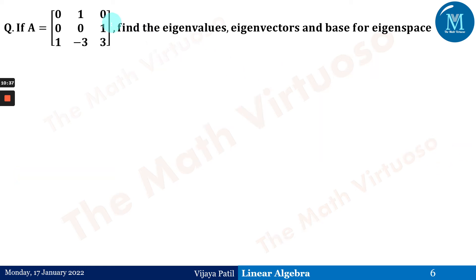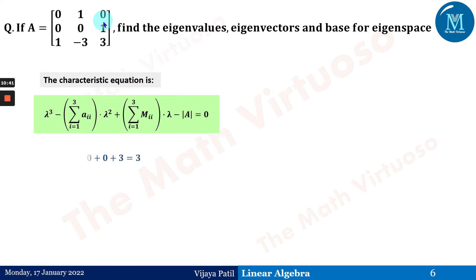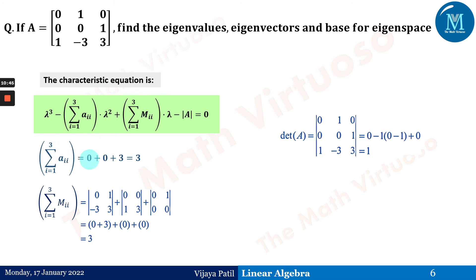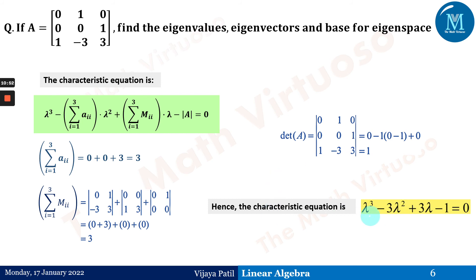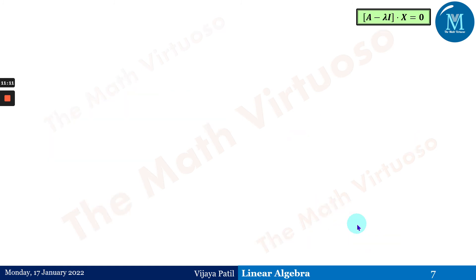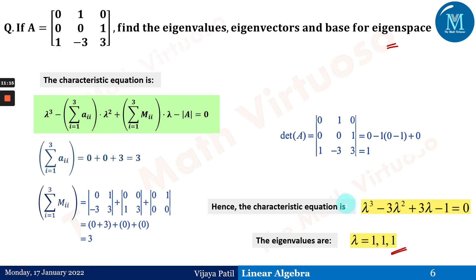Now let us discuss another example. For this matrix A, summation of a_ii is 3, summation of M_ii is 3, and the determinant is 1. The characteristic equation is lambda cubed minus 3 lambda squared plus 3 lambda minus 1 equals 0. The eigenvalues are 1, 1, 1 — all three are repeated. This case is purposely chosen because we have no distinct eigenvalues at all, so Cramer's rule cannot be applied directly.